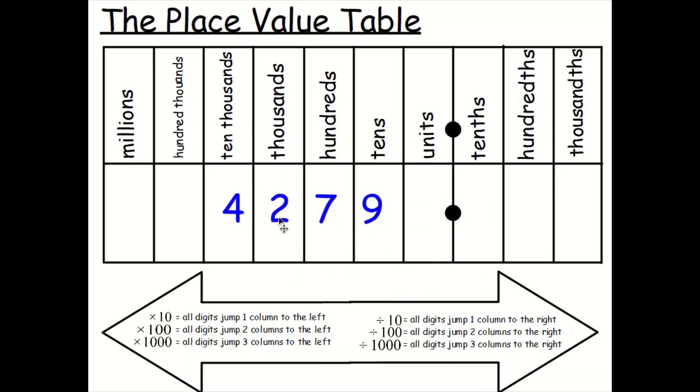What about this number now? I'm going to make a bigger number. I'm going to take 42,790 and multiply that by 10. You can see that all digits jump one column to the left, including that zero. But what do we have to do? We have to put a place value holder in there. So what does it become now? It's become 427,900.